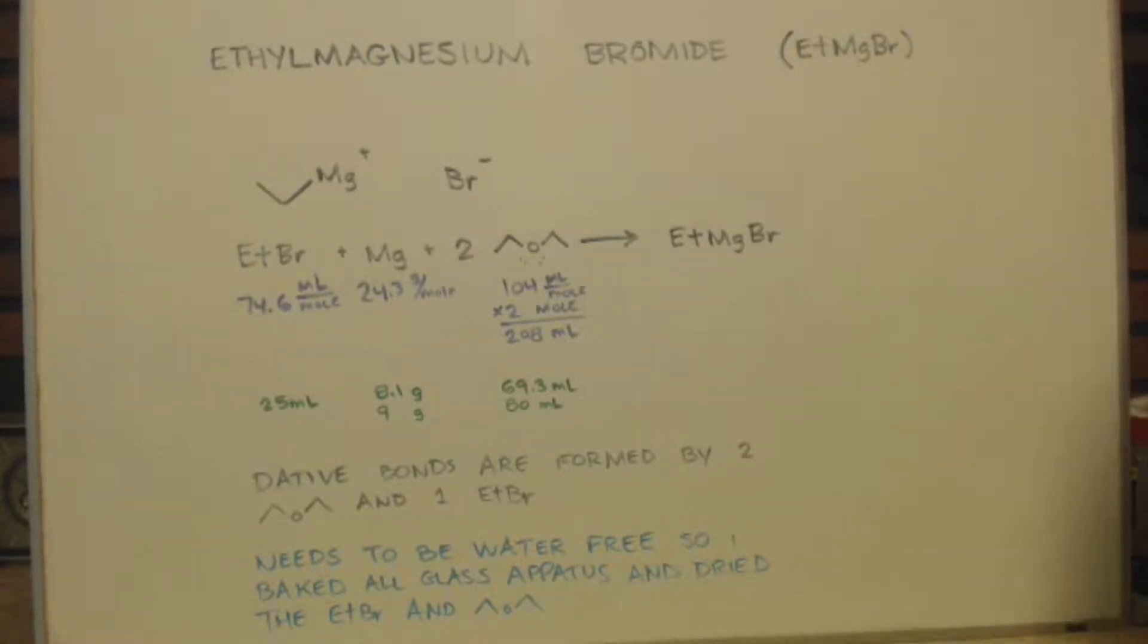This is John Black, Superchemist, here to make some ethyl-magnesium bromide, which is a Grignard reagent.